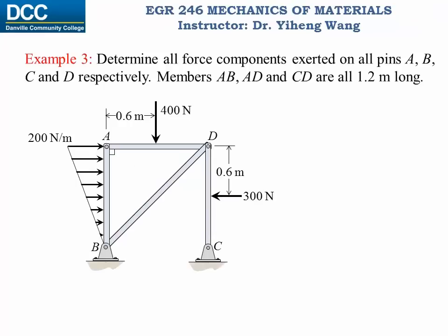For this frame structure made up of slender members connected and supported by pins, we need to determine all force components exerted on all four pins at A, B, C, and D. Notice this is not a simple truss structure. Treating the entire structure as one system and solving for support reactions at B and C through equilibrium will reveal we do not have enough equilibrium equations, and we still need forces on pins A and D. So a detailed approach — analyzing each part individually — is required.